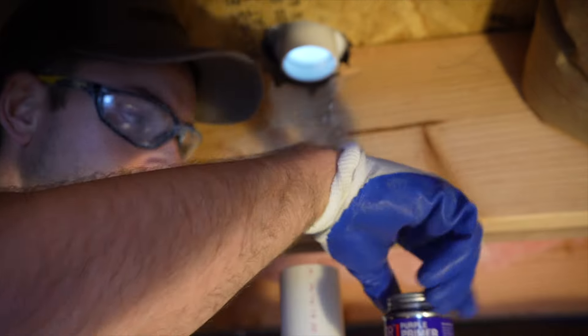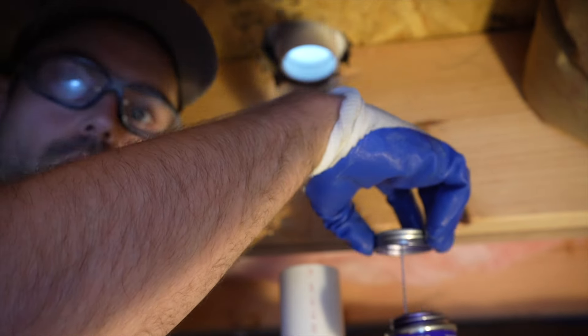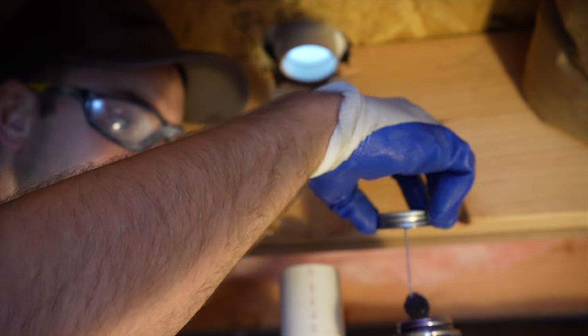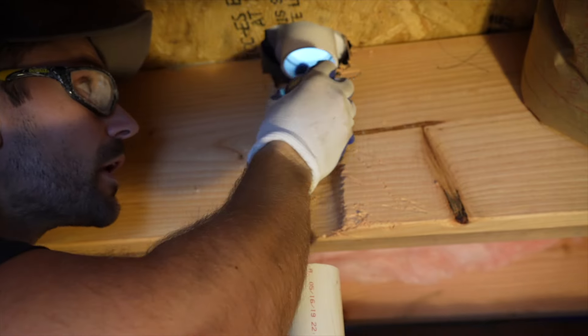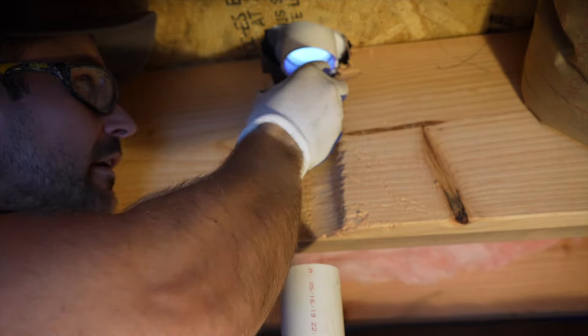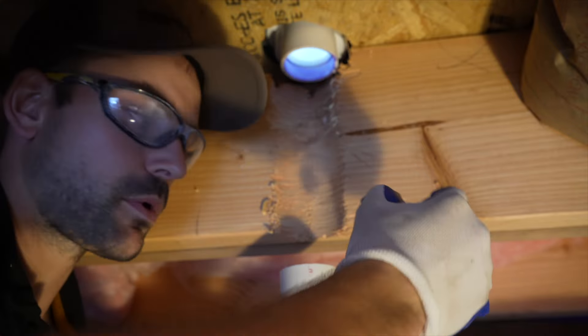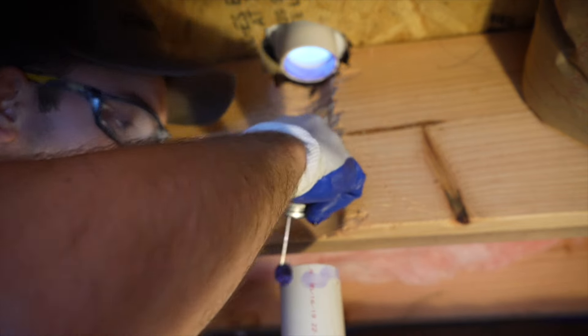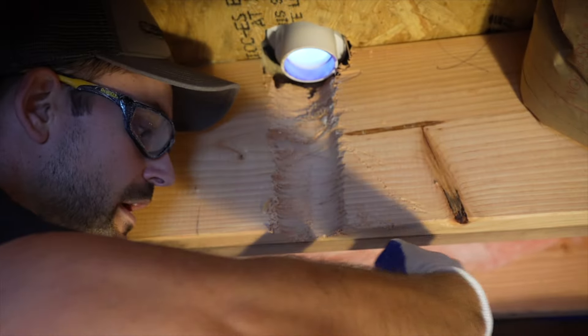I'm going to take the primer and go ahead and prime all of the areas that's going to have a joint. We're going to first prime up inside of the shower drain, and always use the purple primer because the inspectors actually look for the purple to make sure that it was primed, because by code you got to use primer.